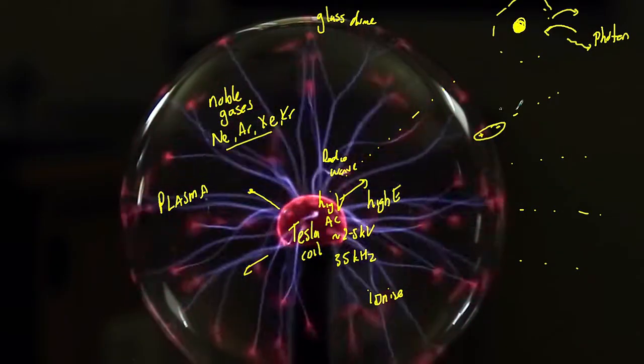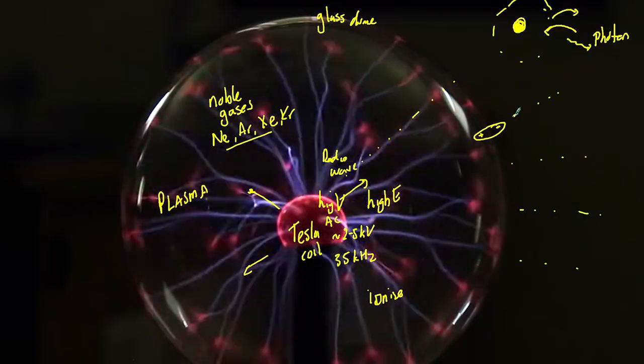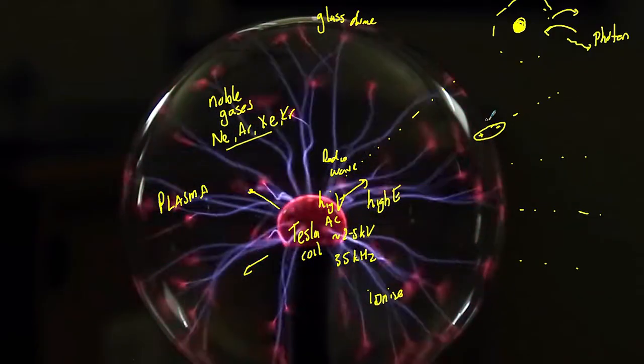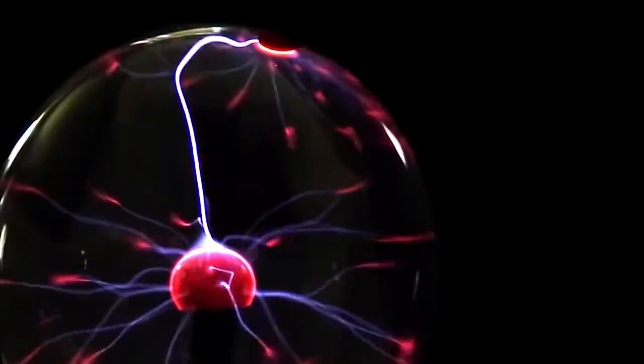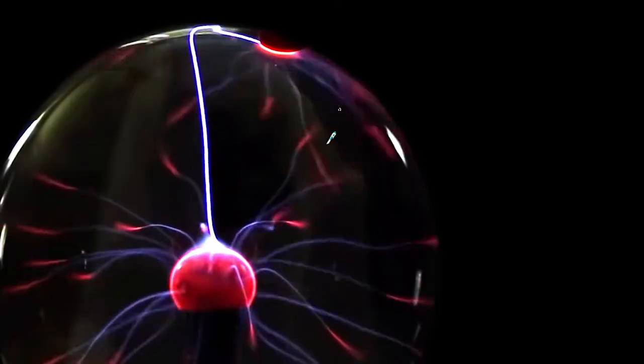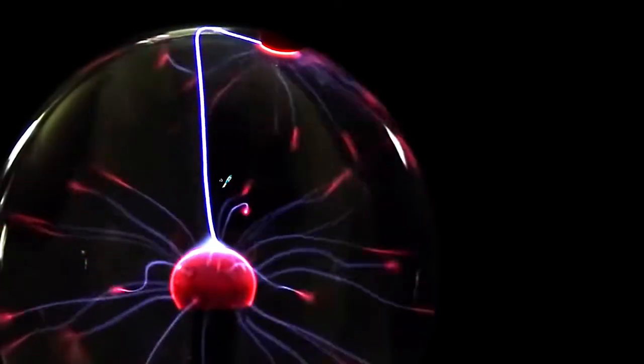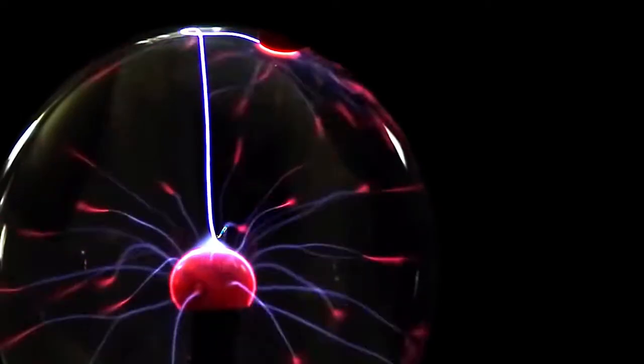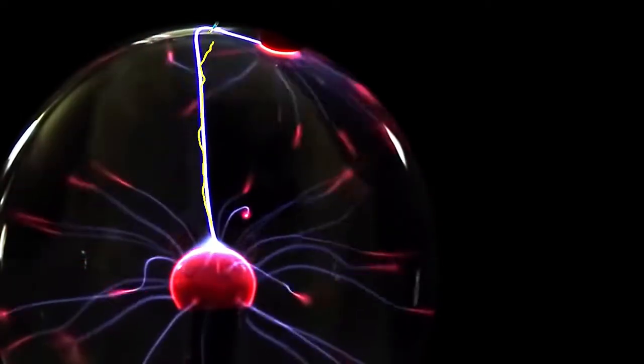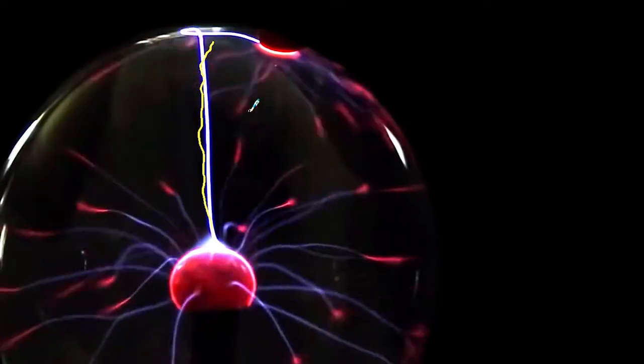But ultimately these electrons are trying to get to the neutral position. So if we touch the dome, what's going to happen? So here you see me touching the dome. And now what we get is this really strong stream of plasma going to the top. Now why is that?